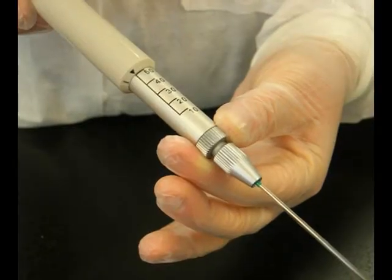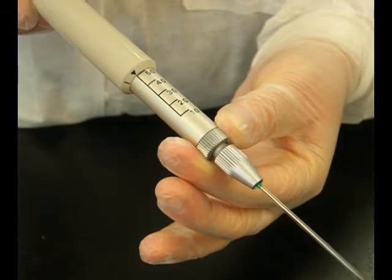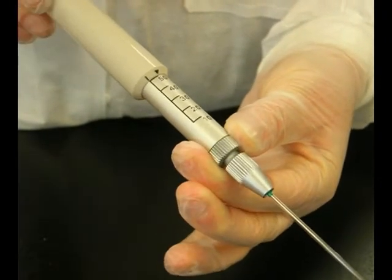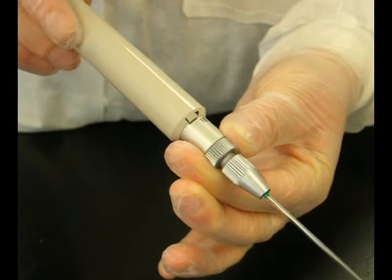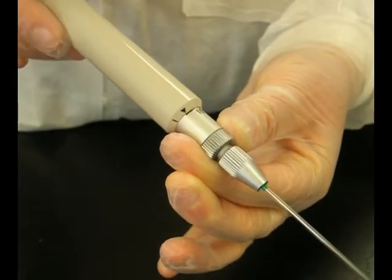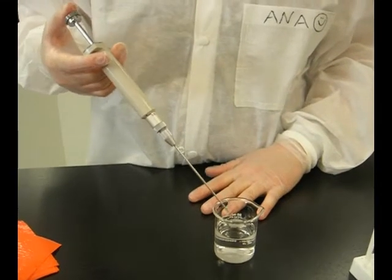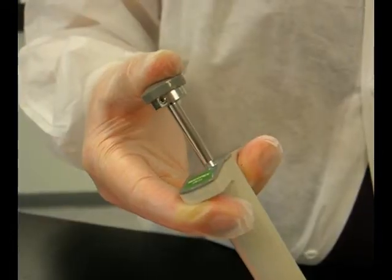Adjust the micropipette for the volume required. We are going to pipette 10 microliters. Unlock the barrel, slide it to the 10 microliter line and lock it.